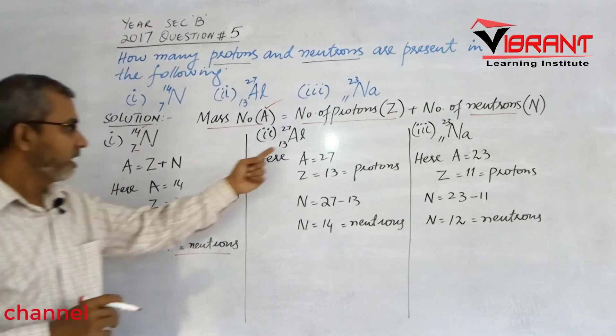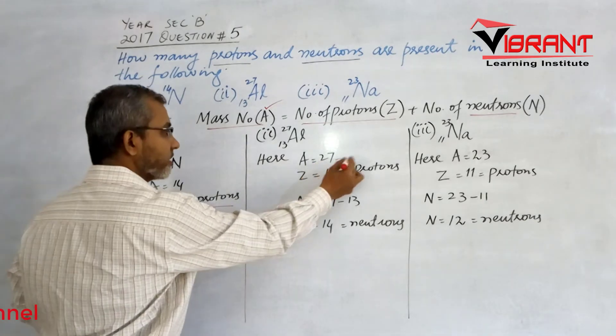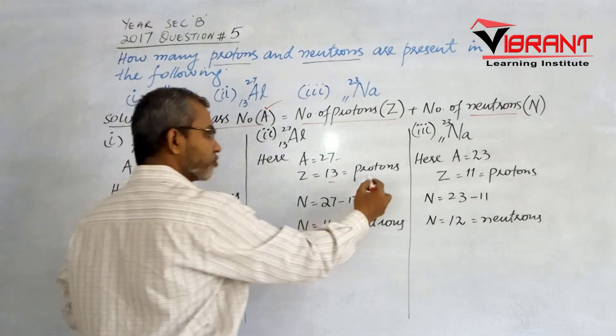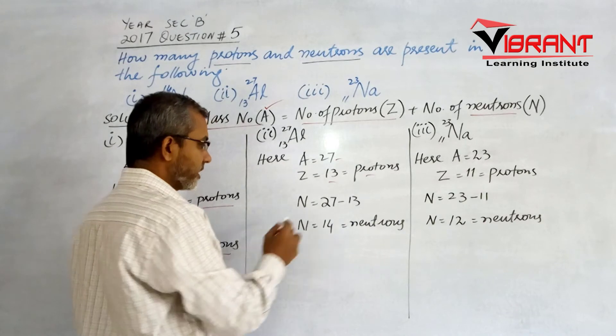For aluminum, A is 27 and Z is 13, so the number of protons is 13. N equals 27 minus 13, which is 14 neutrons.